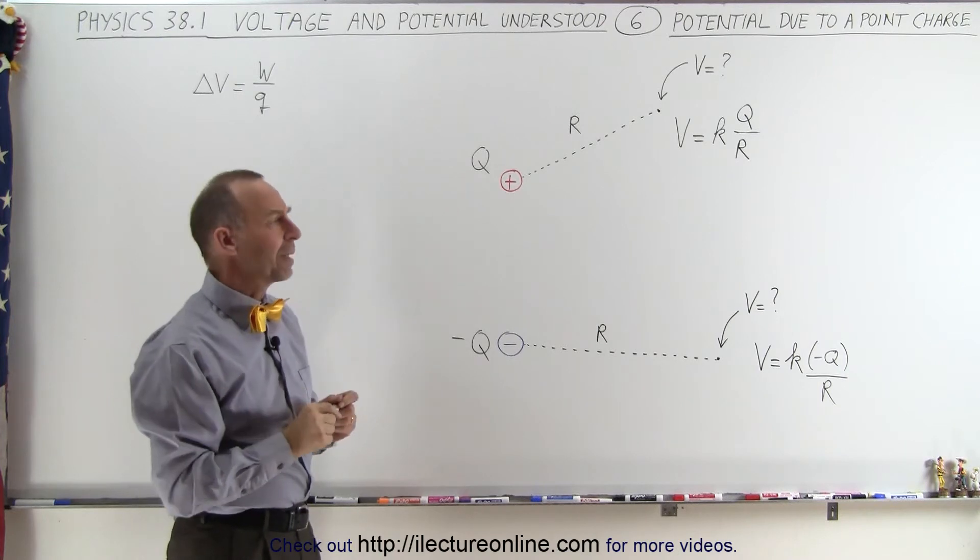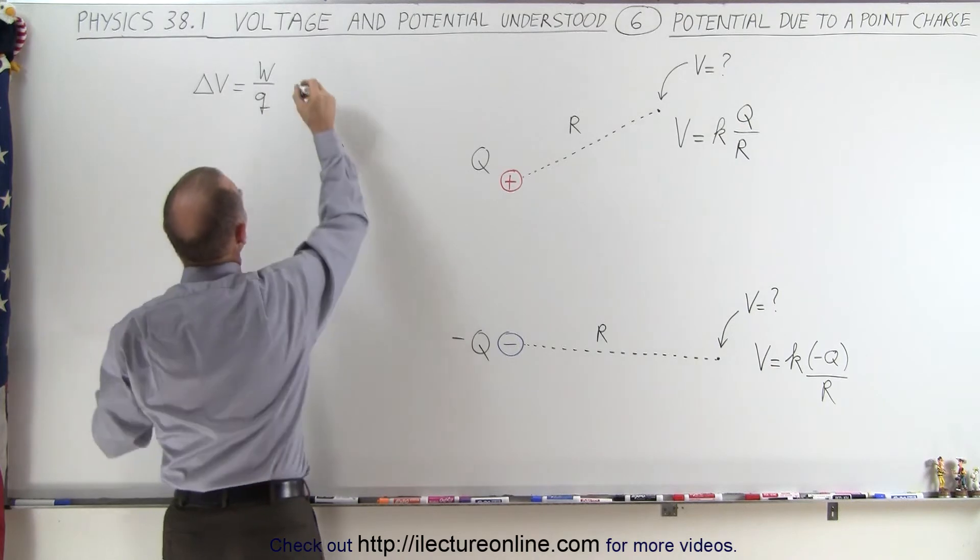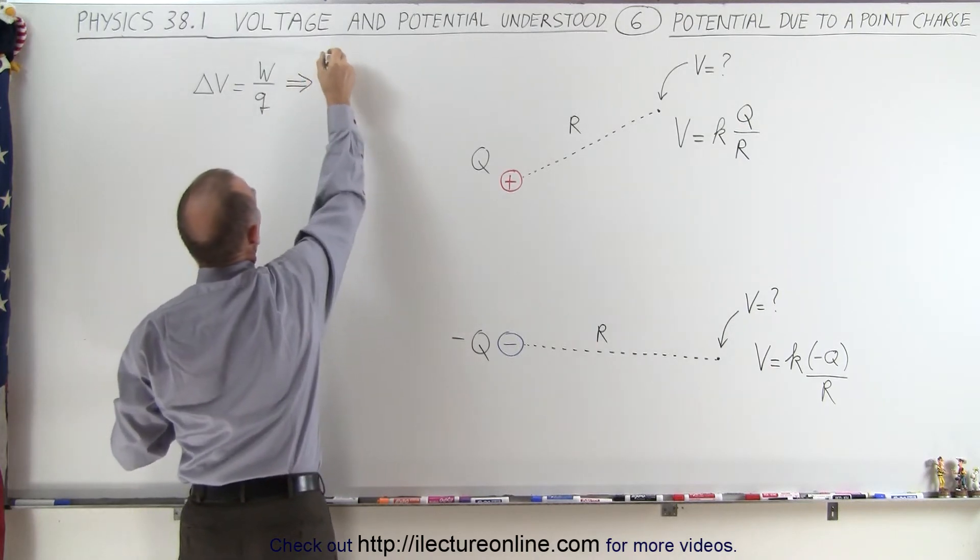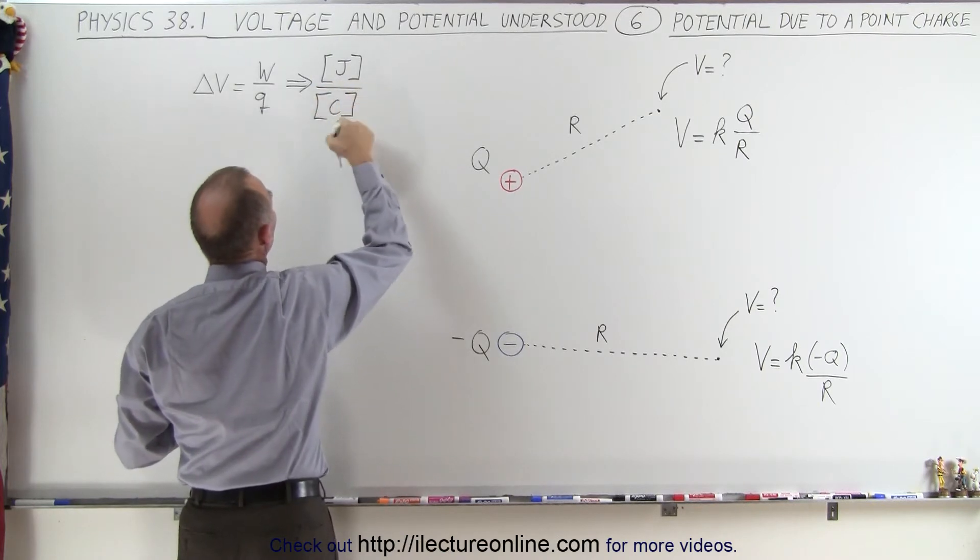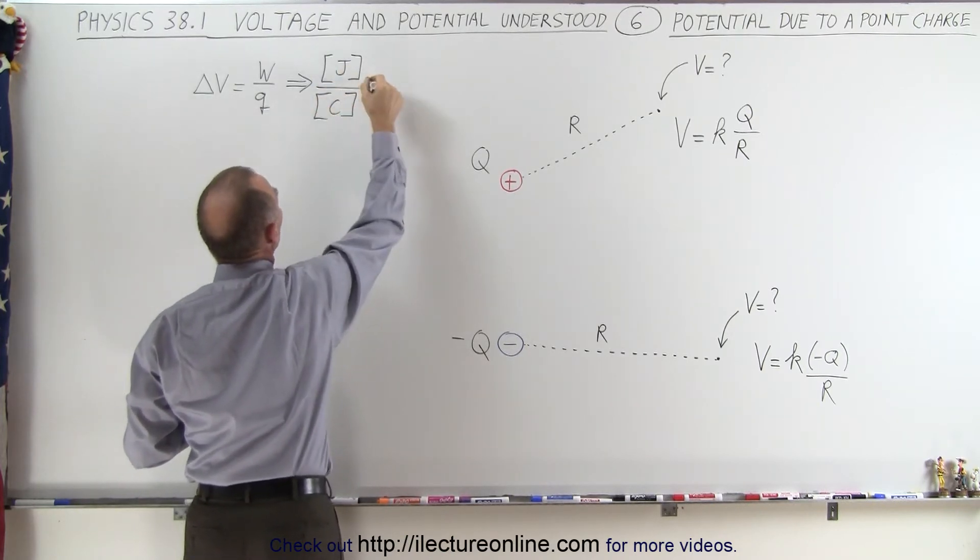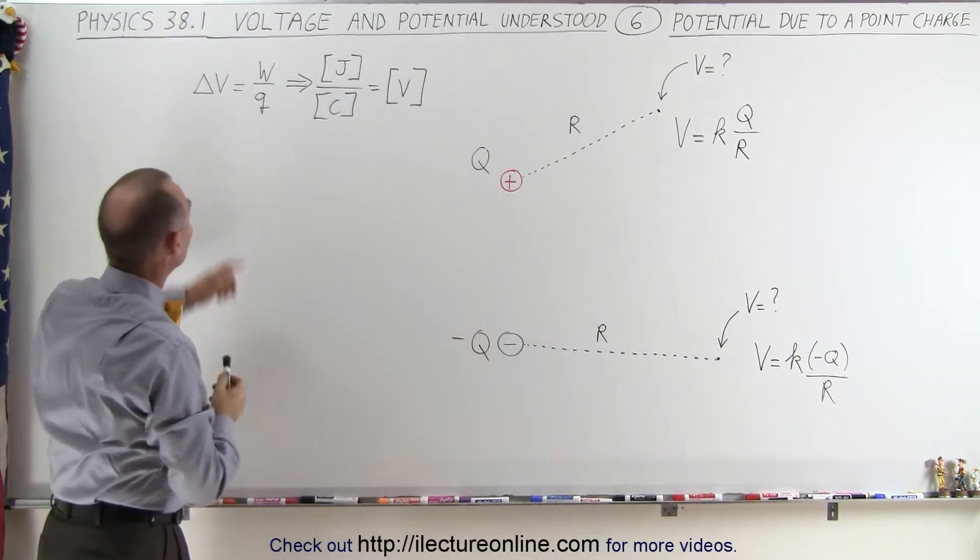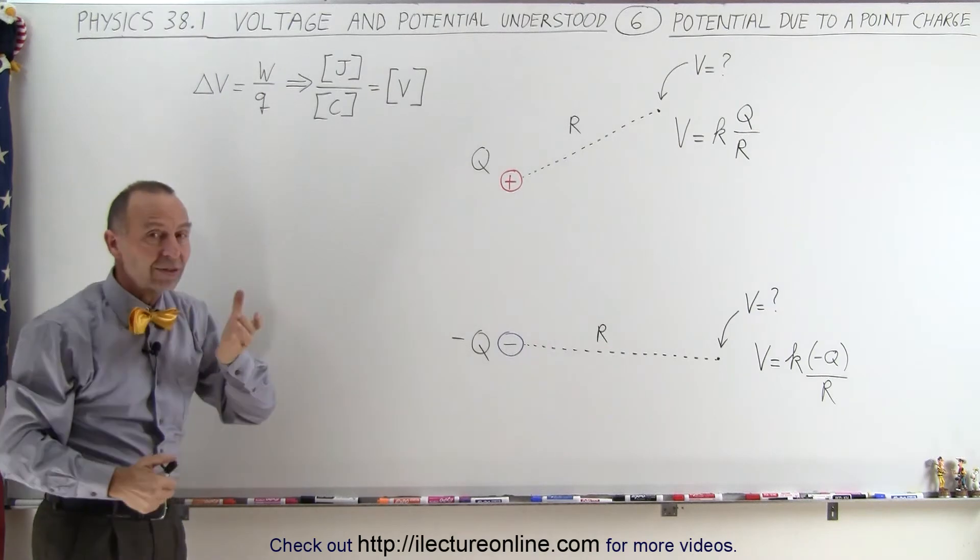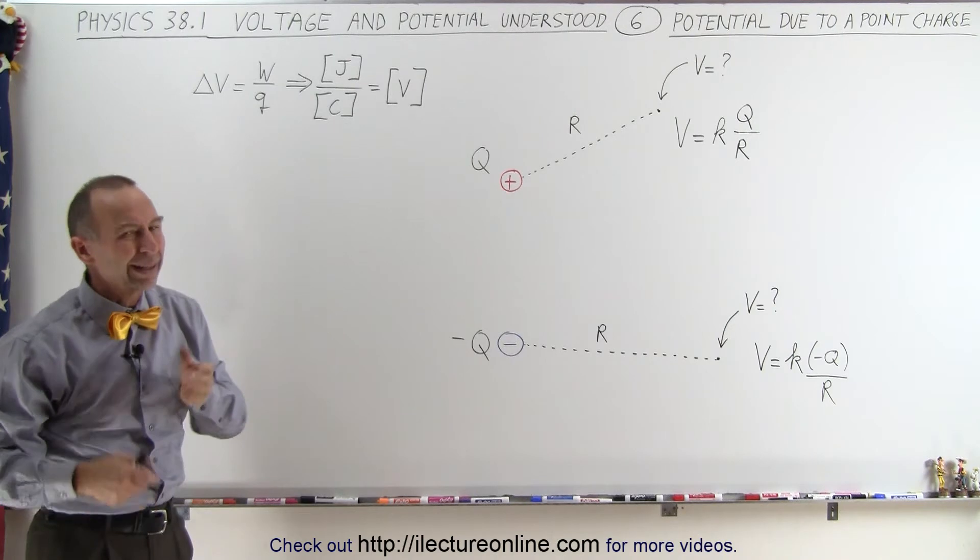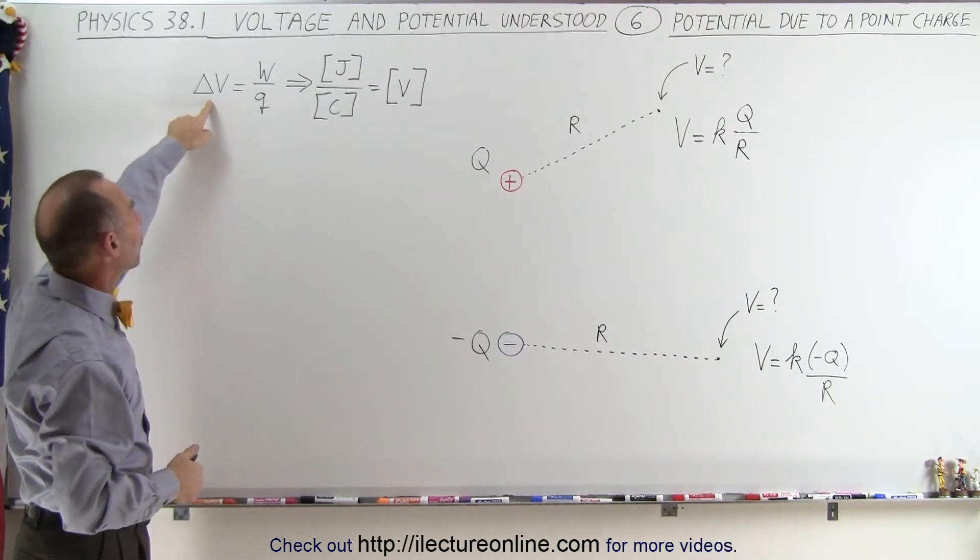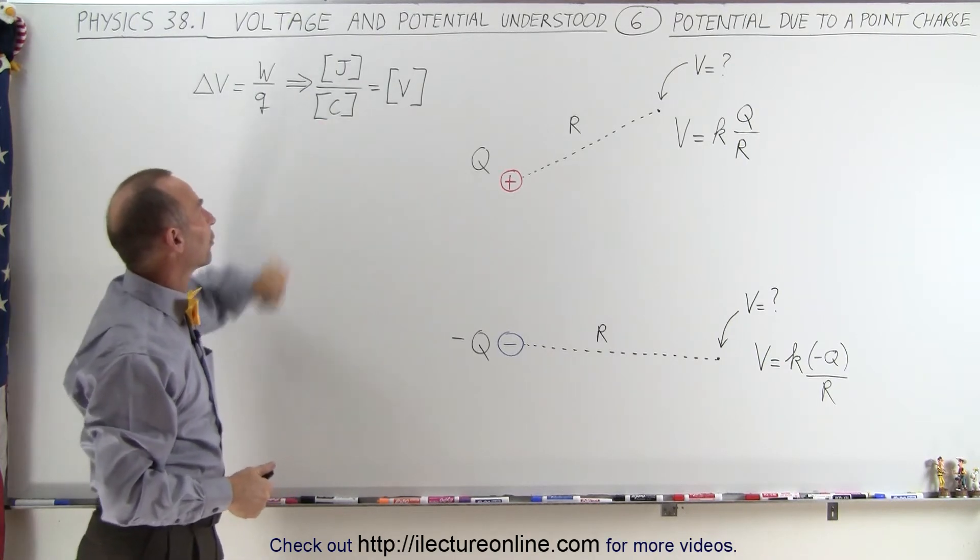What about the units? Do the units make sense? Well, when we come back over here, we know that the units for work is equal to joules, and the unit for charge is coulombs. And we've seen before that joules per coulomb does indeed give us the units for volts. Now here's an example where we use the symbol V for the concept of voltage or potential, and we use the symbol V also for the unit of volt. It's a little confusing sometimes, but yes indeed, we use the same letter for the unit.